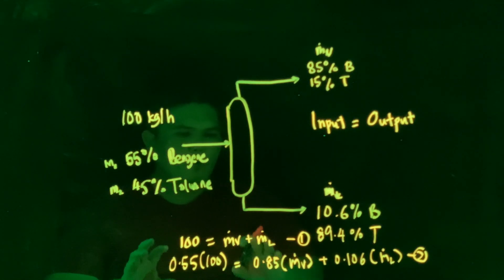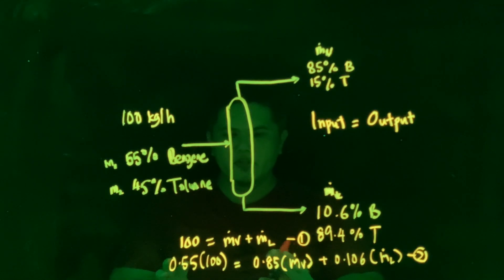So here, once you do the substitution, you should be able to get the answer that we needed. So this is the simplest way of solving material balance problem. Thank you very much.